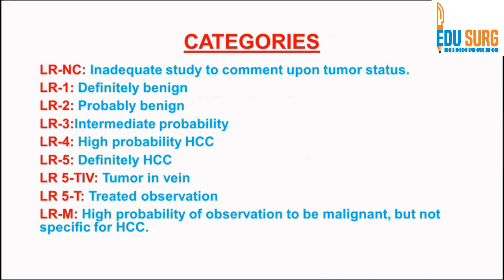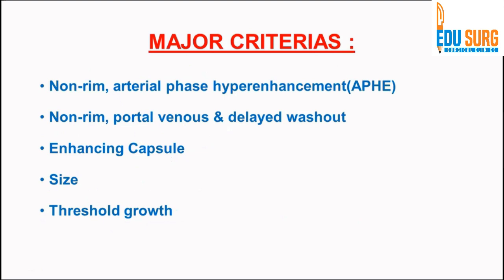The various categories of LI-RADS are: LR-NC — not commentable, describing an inadequate study; LR-1 — definitely benign lesions like cysts or hemangiomas; LR-2 — probably benign; LR-3 — intermediate probability of HCC; LR-4 — high probability of hepatocellular carcinoma; LR-5 — definite HCC; LR-5 TIV — definite HCC with tumor in vein invading the portal system; LR-TR — treated observation; and LR-M — definite malignancy not fulfilling HCC criteria.